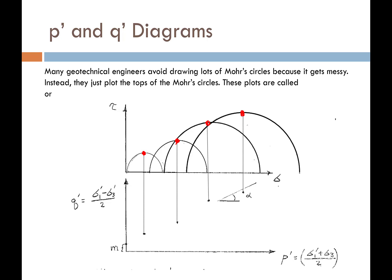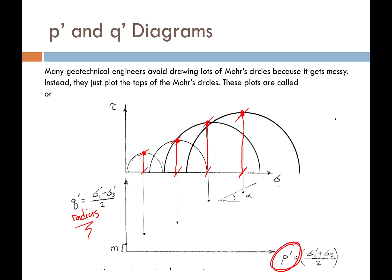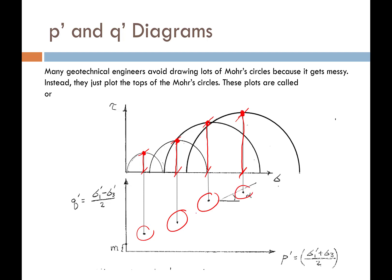The y-coordinate of the top of each Mohr circle becomes a new coordinate which we call q. So q is just the radius of each Mohr circle. The x-coordinate of the center of each circle we call p. So q is the y-coordinate of the top of the circle, and p is the x-coordinate of the center of the circle. Instead of drawing four Mohr circles, I now just have four points.